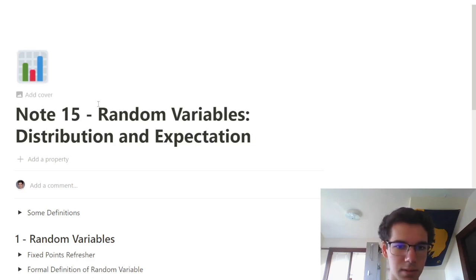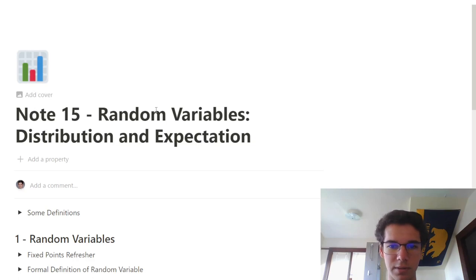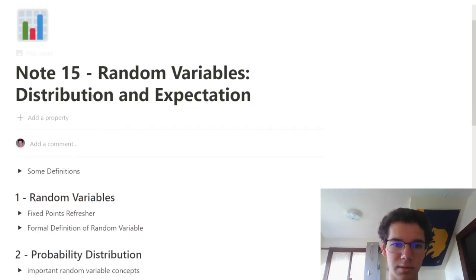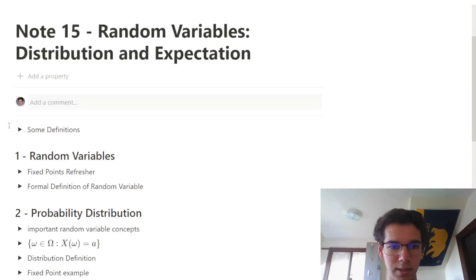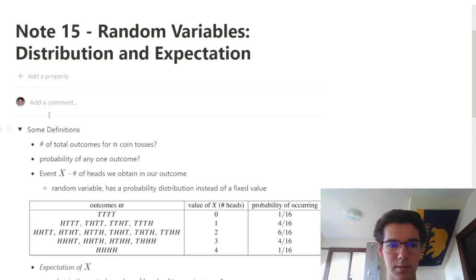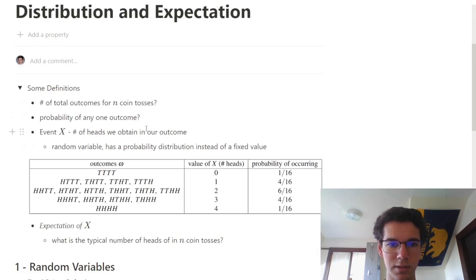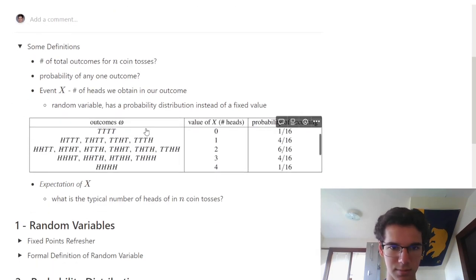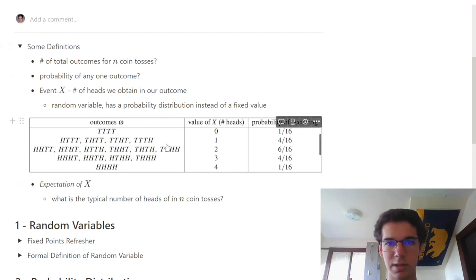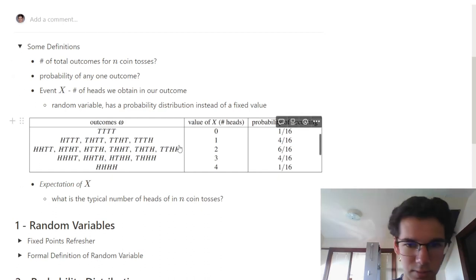This is going to be Note 15 from CS70. This one is about random variables, specifically about distribution and expectation. We're going to look at an example that we're going to use throughout this note.